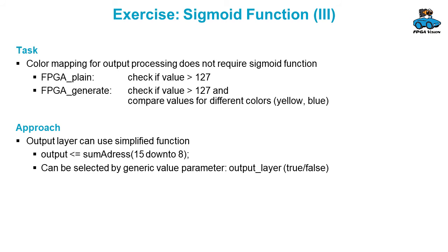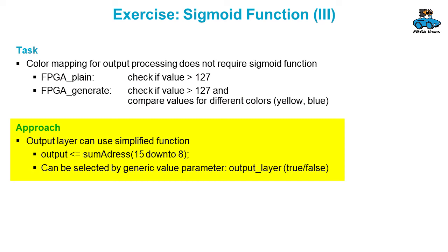Another way to save memory on the FPGA is considering that the output processing does not require the sigmoid function. In the design FPGA play, the output processing only checks if the value is larger than 127 or not, so you don't need the complex sigmoid function before checking this value. The same holds for the design FPGA generate — you check if the value is larger than 127 and compare which of the values for the different colors, in our example yellow and blue, is larger. Therefore, the output layer can use a simplified function by just forwarding the top 8 bit of the address. To make it easy to handle, you could select this simplification by a generic value to the neuron, indicating whether it belongs to the output layer — true or false.